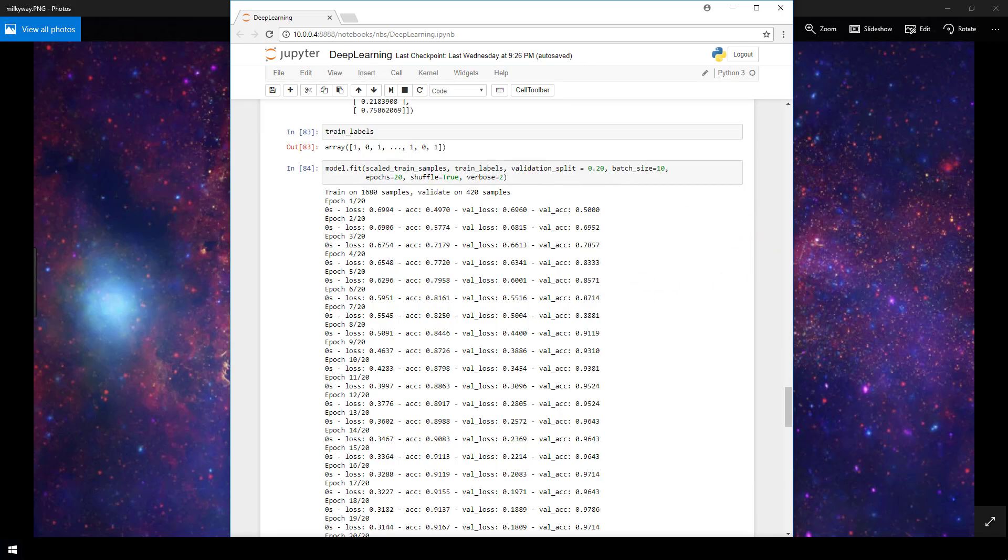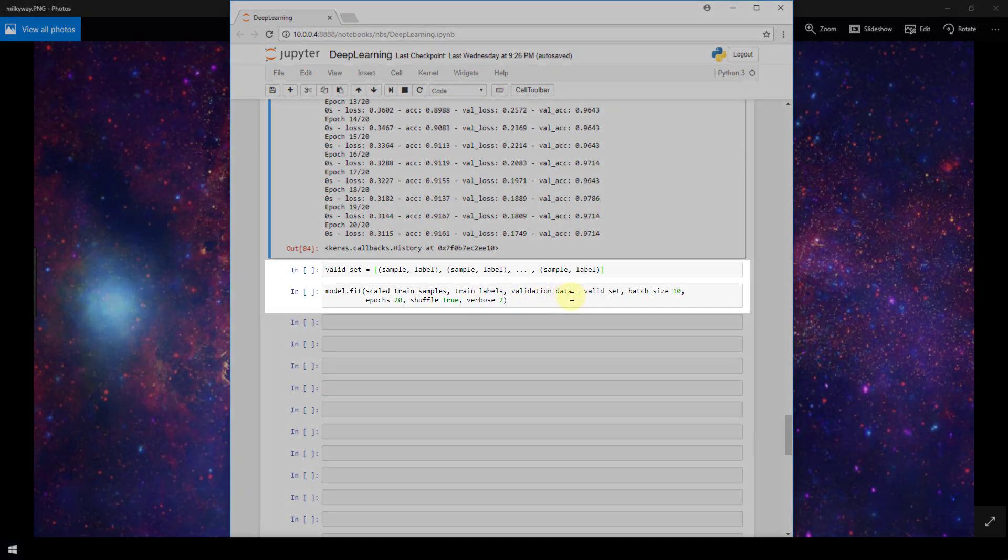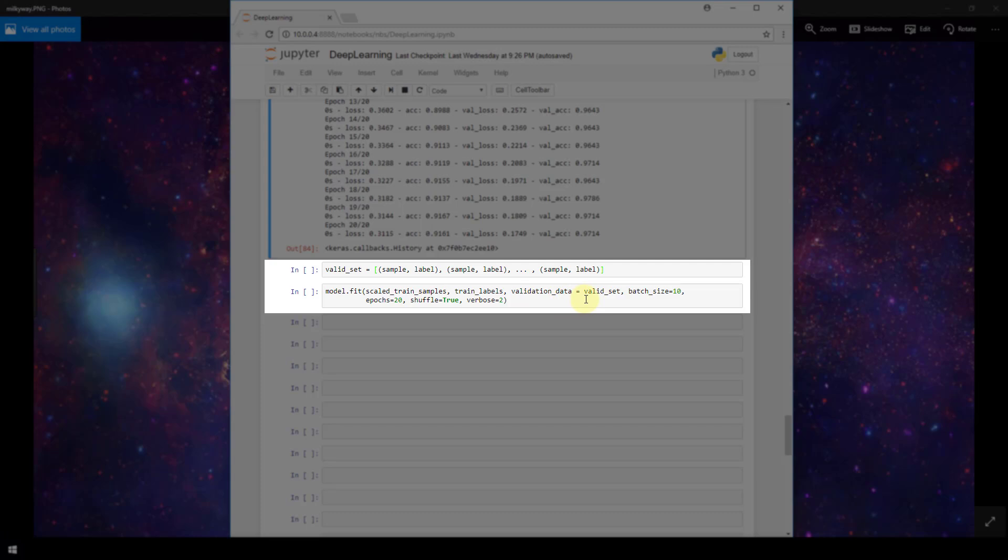But we could also create an explicit validation set that is separate from the training set altogether and then pass that entire set into our model as well. And to do that, we wouldn't be using this validation split parameter. Instead, if we scroll down, we see we would be using this validation data parameter instead and passing in the validation set explicitly here.